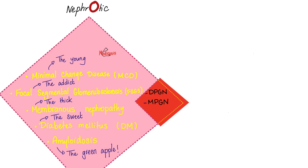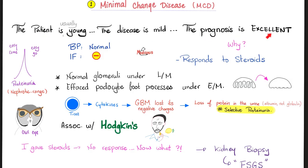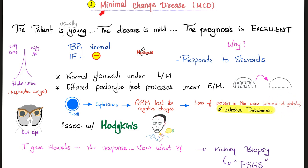So let's talk about minimal change disease. The patient is young, the disease is mild, and the prognosis is excellent. Why excellent? Because the patient responds to steroids like magic. By light microscopy, you see normal glomeruli. By electron microscopy, those beautiful foot processes are no longer foot processes — they have been effaced, they have been flattened. Who flattened them? Cytokines released by T lymphocytes. When the podocyte is destroyed, it loses its negative charges and can no longer repel proteins, especially the smallest protein, albumin. So albumin ends up in the urine — not necessarily globulin — and this is called selective proteinuria. The kidney is damaged, but not so damaged. That's why it's minimal.